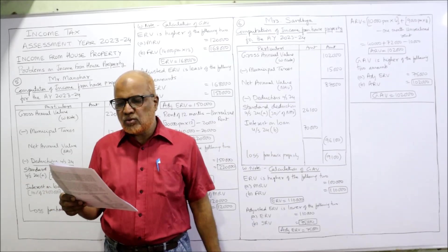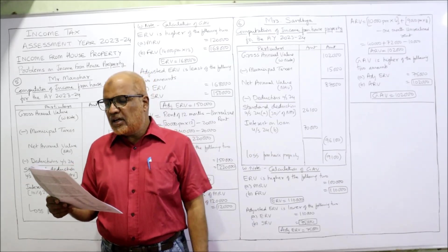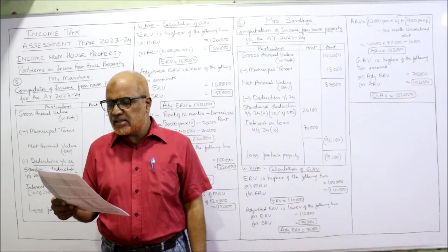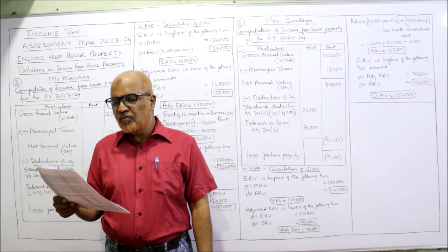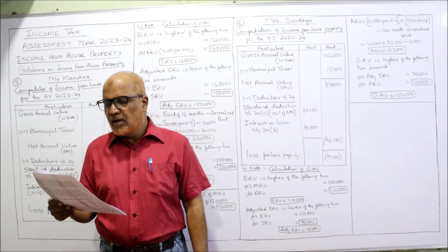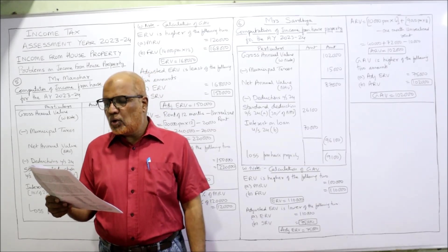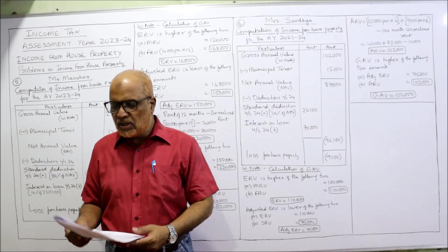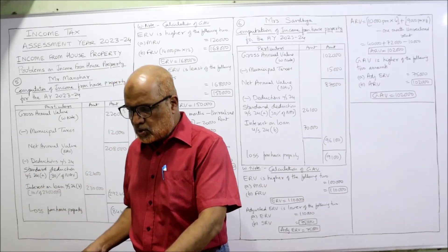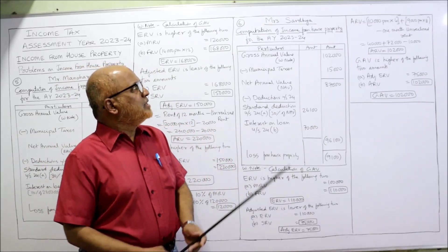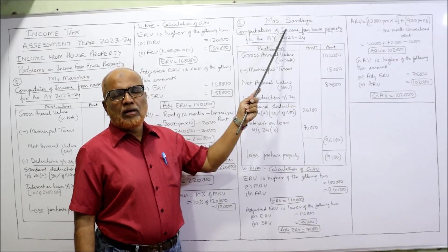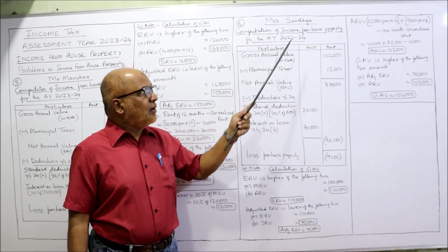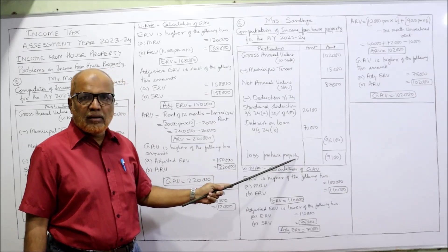Expenses during the previous year: repairs — not allowed as deduction; municipal taxes 15,000 — allowed as deduction; interest on loan taken to construct the house 70,000 — allowed as deduction. Compute income from house property. Mrs. Sandhya is the owner. We make the format as usual — computation of income from house property for assessment year 2023-24 — then compute the GAV.